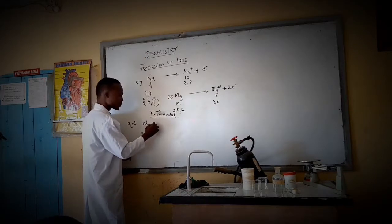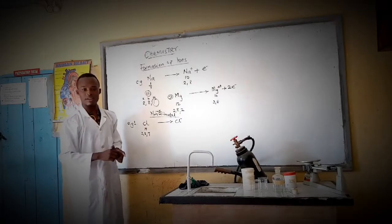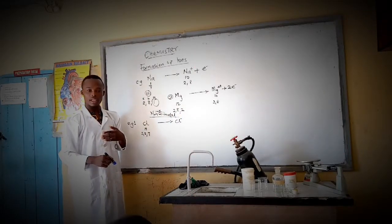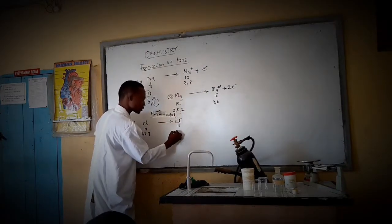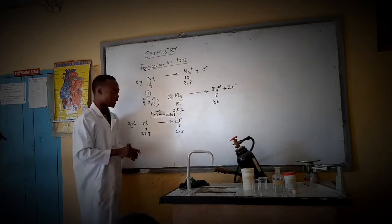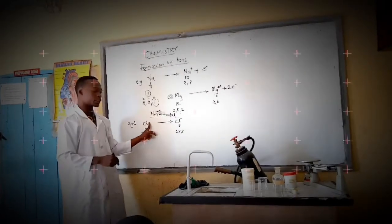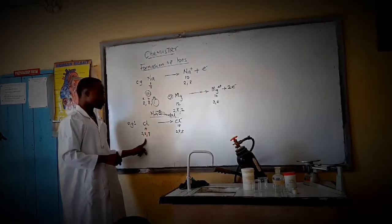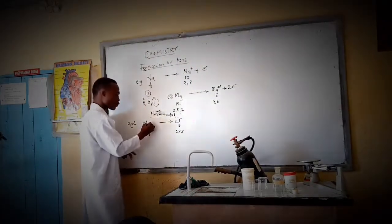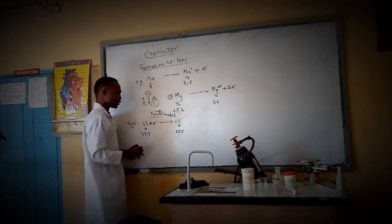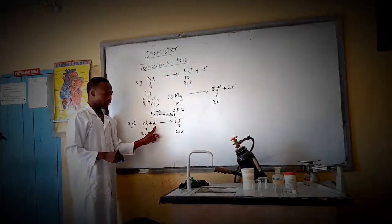Chlorine takes in 1 electron and turns into Cl−1 (chloride ion). It now has 18 electrons (2, 8, 8). To balance: the original had 17, the ion has 18, so we add 1 electron to the other side to balance it. That added electron makes both sides equal at 18.